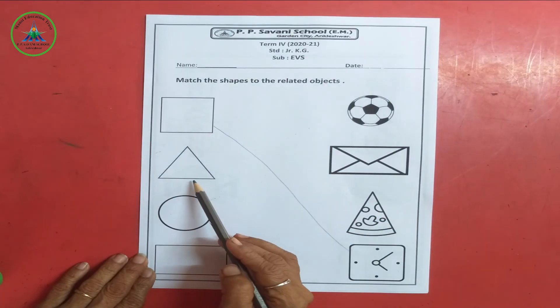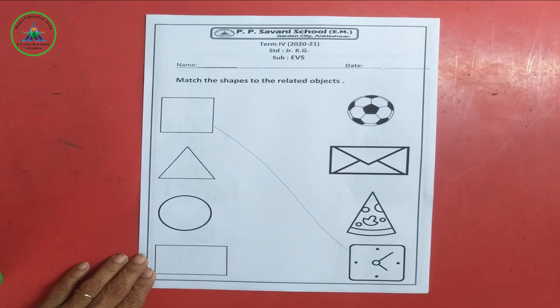Now same here. Which shape is this? This is a triangle. Now find here. Where is triangle object.